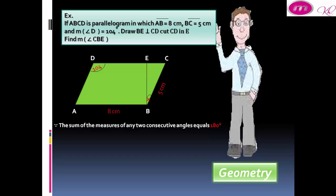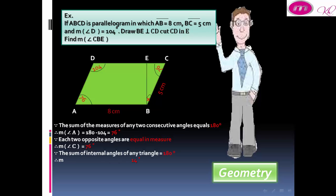Because the sum of measures of any two consecutive angles equals 180 degrees, therefore the measure of angle A = 180 - 104 = 76 degrees. Because the sum of internal angles of any triangle equals 180 degrees, and the measure of angle BEC (because BE is perpendicular to CD) equals 90 degrees.